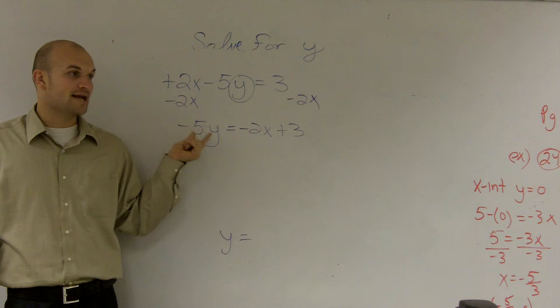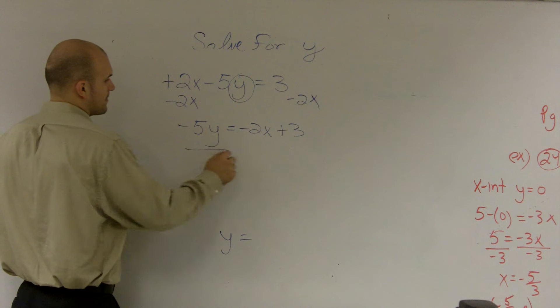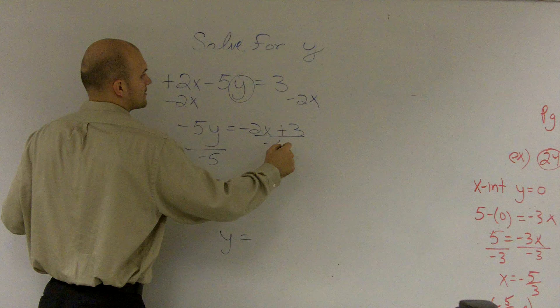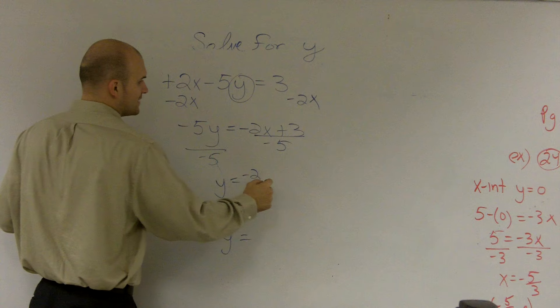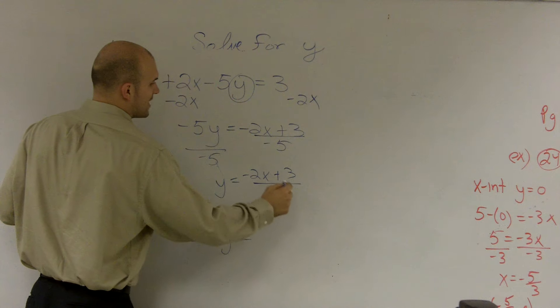But now I'm going to divide by negative 5 because negative 5 is multiplied by my y. That cancels out to give me 1. So I'm left with y equals a negative 2x plus 3 divided by 5.